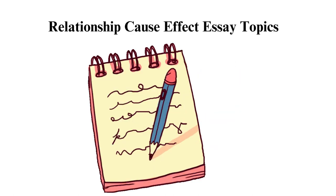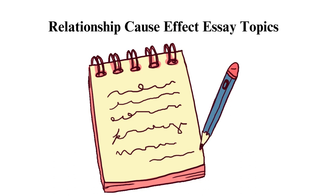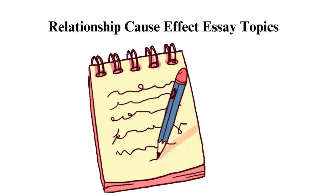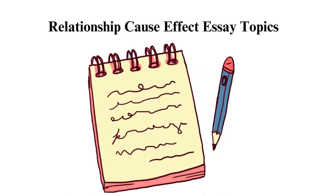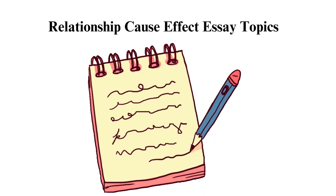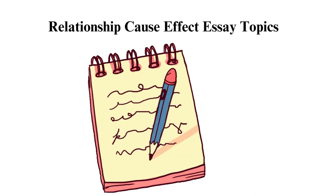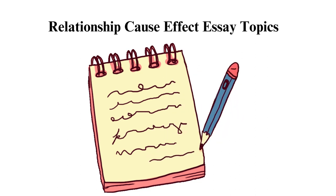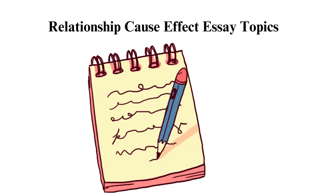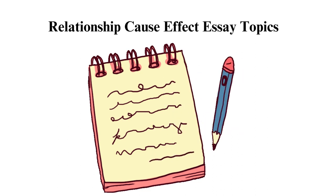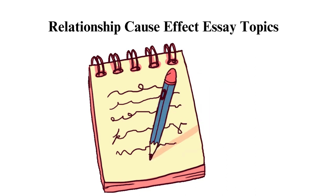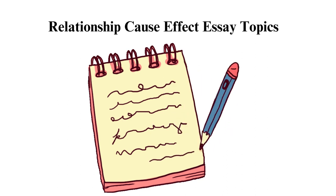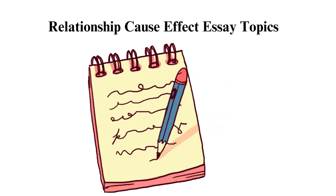Relationship Cause and Effect Essay Topics: 1. What are the reasons for divorces? 2. Reasons people stay in dysfunctional relationships. 3. Secrets for successful long-term relationships. 4. What are the impacts of remote working on marital relationships? 5. Why are people afraid of marital commitments? 6. How does divorce influence children? 7. The connection between parenting style and children's self-image. 8. How has the feminist movement had an impact on relationships? 9. The effect of the pandemic on family life. 10. How has technology changed the dating dynamics?